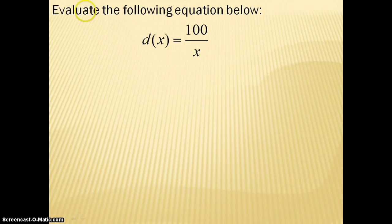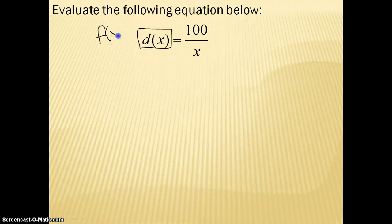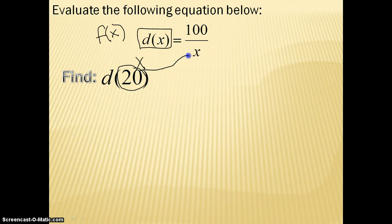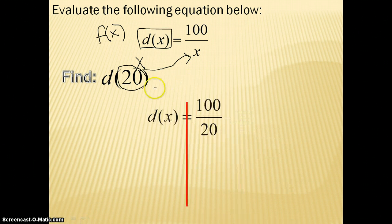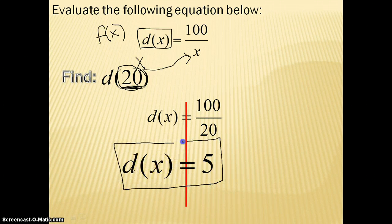Let's look at some examples. We have: evaluate the following equation below. d of x equals 100 divided by x. Again, d of x is the same thing as f of x — we just used a different letter, d. Now we're going to find d of 20. Whatever is inside the parentheses represents your x, so we're going to take 20 and plug it in. We would have d of x equals 100 divided by 20. Whatever is inside the parentheses is your x value, so it goes in place of x. Now just solve — 100 divided by 20 is 5. So d of x equals 5.